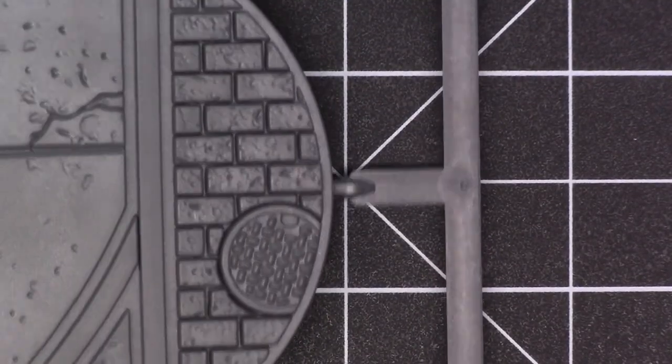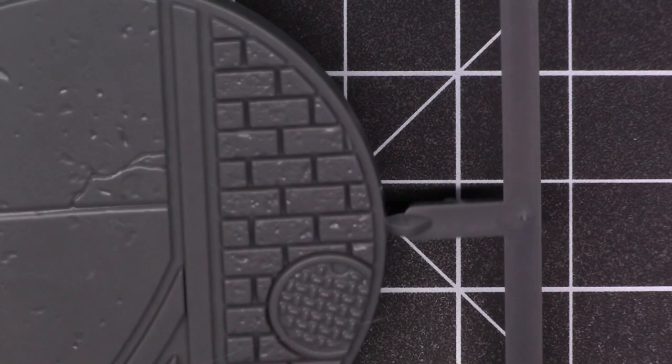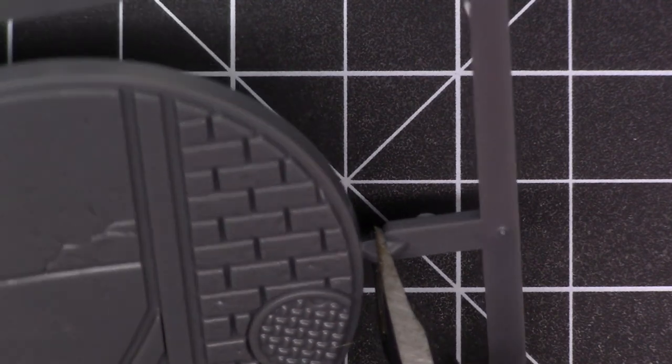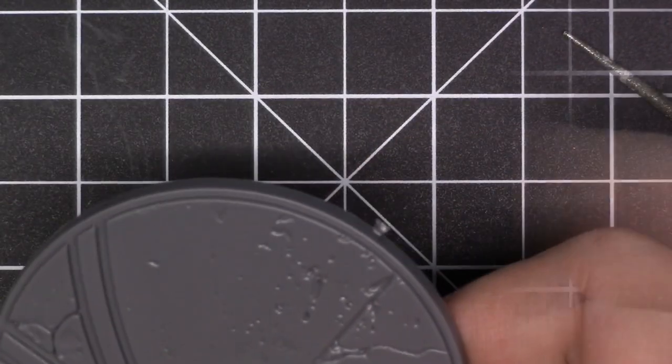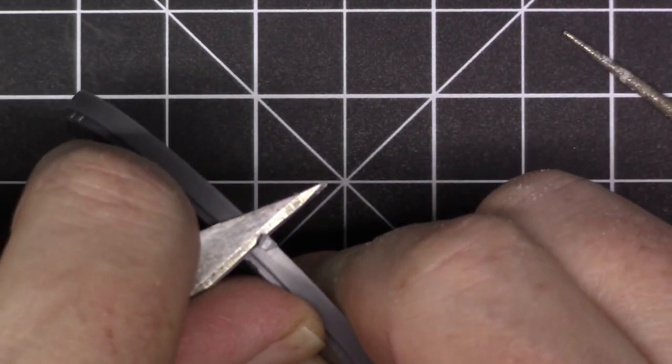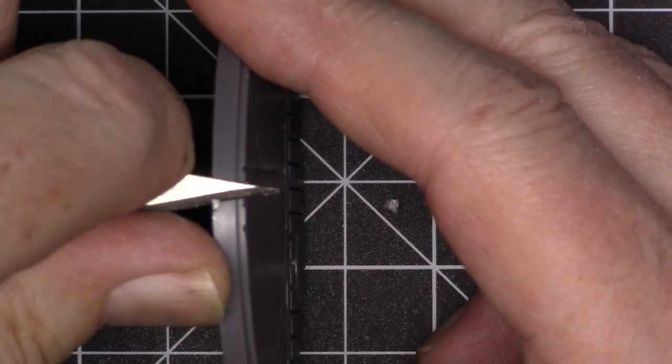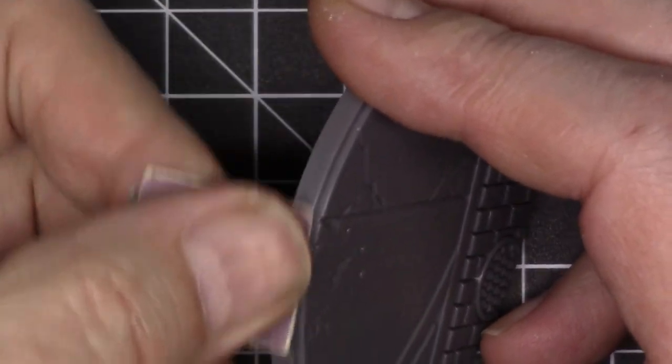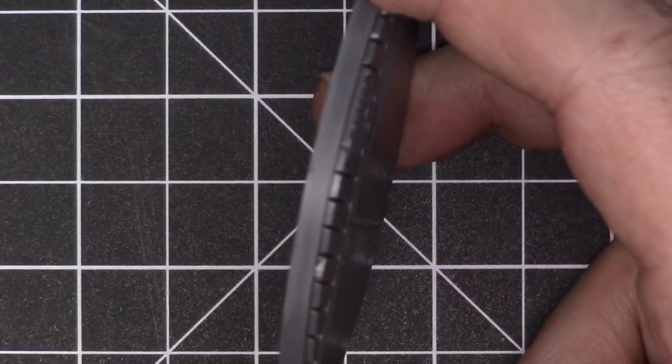These sprues have fairly large gates. This is a gate. So when you cut them you do not want to cut them right up against the piece because you'll tear the plastic. You want to cut away and leave a nub. Then you can come back with your exacto blade and you can cut that nub off and sand, and you'll get a smooth finish all the way around. Take some sandpaper, this is 320, and sand it. You keep sanding it until you can't see it anymore.